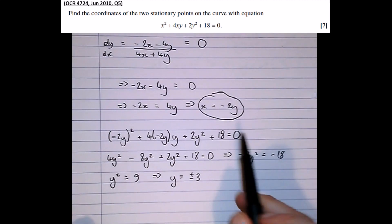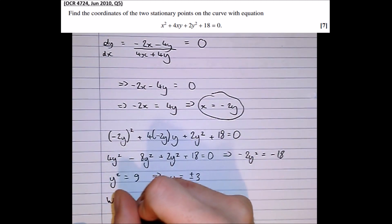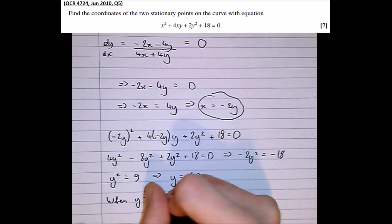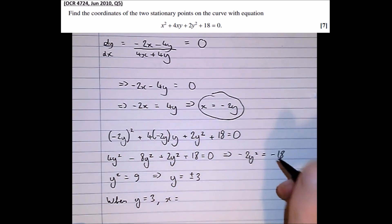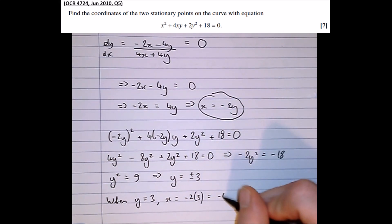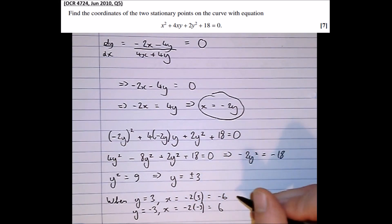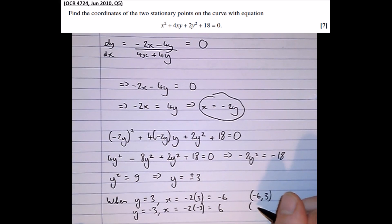So subbing that back into the equation on which we know the stationary points lie, so when y equals 3, x equals minus 2 lots of 3, which is minus 6, and when y equals minus 3, x equals minus 2 lots of that, which is equal to 6. Therefore, giving stationary points minus 6, 3, and 6, minus 3.